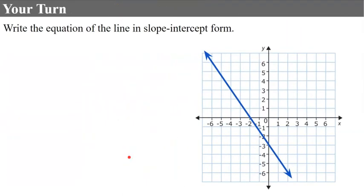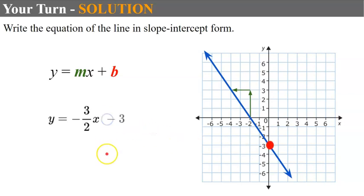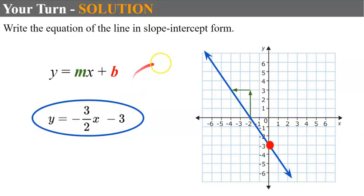Your turn again — write the equation of this graphed line in slope-intercept form. Pause now and come back when done. Welcome back. Identifying slope: from a chosen point, rise 3 and run negative 2, giving a slope of negative 3 halves. The y-intercept is negative 3. So the equation of this line in slope-intercept form is y equals negative 3 halves x subtract 3.